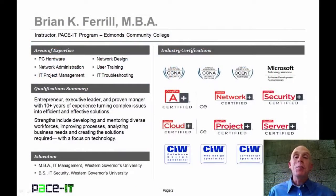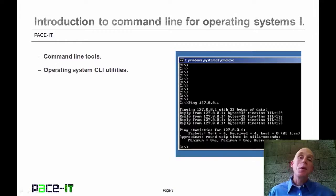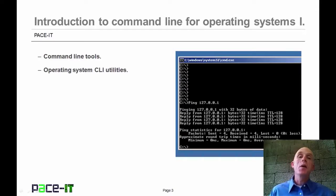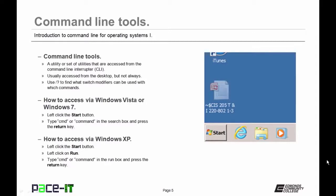I'm Brian Farrell, and welcome to Pace IT's session on command line tools for the operating system, Part 1. Today we're going to talk about what command line tools are and discuss some operating system command line utilities. Command line tools are a utility or set of utilities accessed from the command line interpreter (CLI) — usually from the desktop, but not always. You can use forward slash question mark to find out what modifiers can be used with a given command. To access the command line from Vista or Windows 7, left-click Start, then type command or CMD in the run box. On Windows XP, click Start, then Run, then type CMD or command.